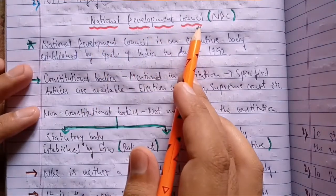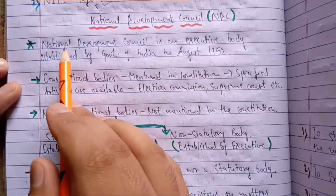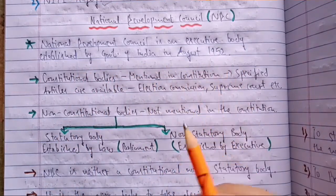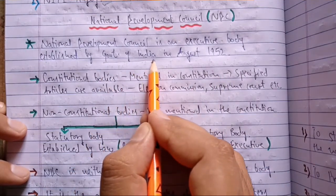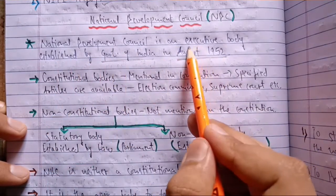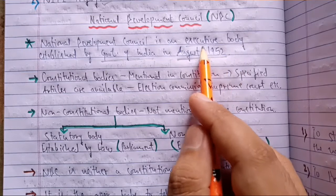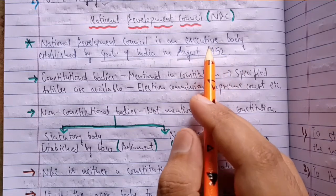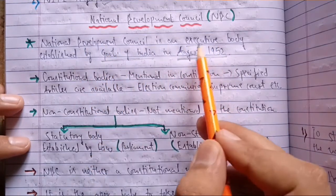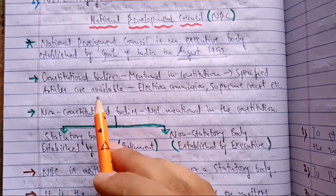National Development Council — popularly called NDC. The first point: National Development Council is an executive body established by the Government of India in August 1952. It was established by the Government of India, date August 1952. The important thing to note here is the term 'executive body.' You have already learned this in class 11th in detail. It is one of the important organs of the government — the executive.